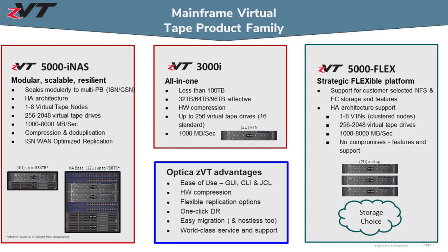The 5000 iNAS starts as small as a 4U system with 384 terabytes of effective capacity. Our base HA unit is a 12U solution that delivers three-quarters of a petabyte of capacity and 2,000 megabytes of performance — but it's highly scalable and flexible. The 3000 iNAS we typically target to customers with less than 100 terabytes of capacity, with three different effective capacity levels.